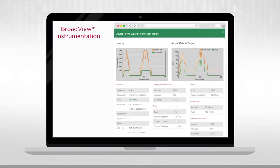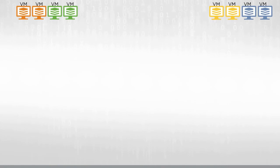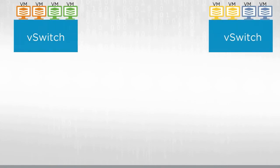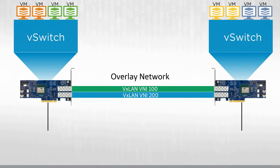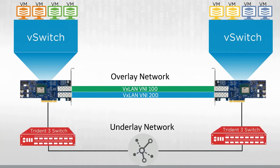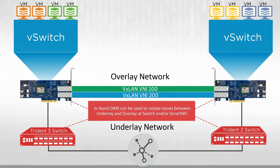Now let's discuss the second scenario. Overlay technologies such as VXLAN have increased management complexity and reduced visibility into traffic flows. Operators have been demanding the ability to monitor packet flows across the switch and server in a seamless way, so that packet flow related issues can be isolated to underlay versus overlay for easier network troubleshooting and SLA enforcement. We will explain how Trident III's in-band OAM offers a solution to this problem using Broadview Agent and analytics application.